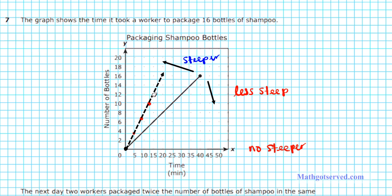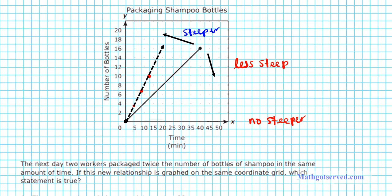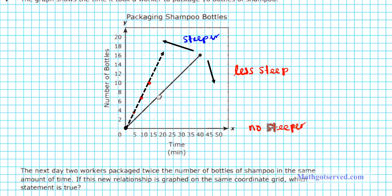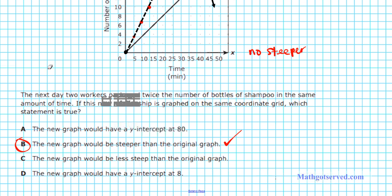So what's the situation here? If you look at this new line, is it steeper or less steep? Since it's closer to the y-axis, we can see that it's much steeper than the original line. The new graph will have a y-intercept of 0 — the y-intercept does not change. The new graph will be steeper than the original graph — that's exactly what we have. So the answer is option letter B.